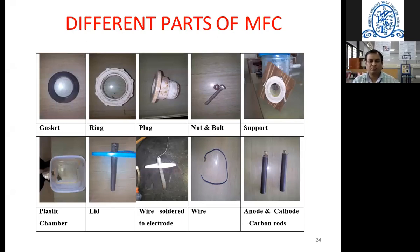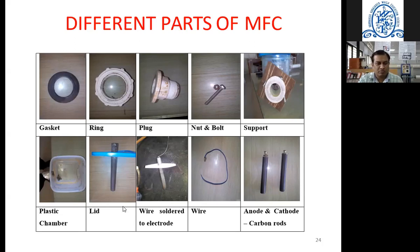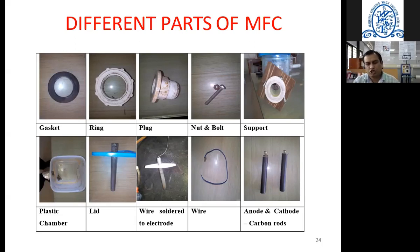In my MFC there are two compartments: anode chamber and cathode chamber. I am not using any mediator. The components include gasket, ring, plug, nut and bolt, support, plastic chamber, lid, wires, soldered wire, anodes, and cathodes. Initially I tried a carbon rod, then shifted to graphite rod, then graphite plate, then lithium-coated graphite plates, then modified electrodes. I will discuss the results and conclusions from these trials.